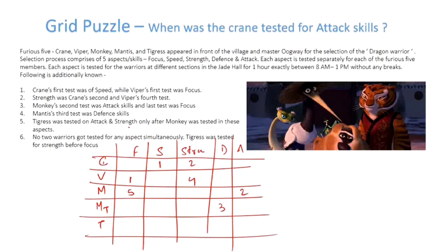Tigress was tested on Attack and Strength only after Monkey was tested in these aspects. No two warriors got tested for any aspect simultaneously, so it's like a Sudoku puzzle. Tigress was tested for Strength before Focus. Alright, let's see what we can do now.